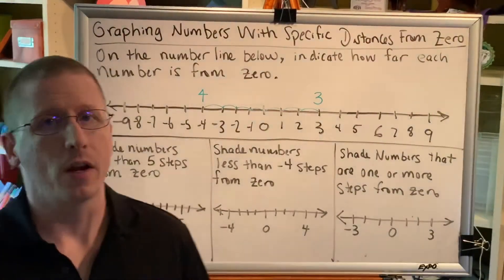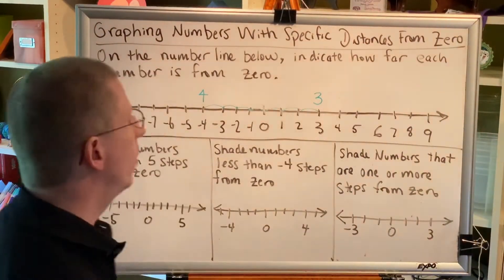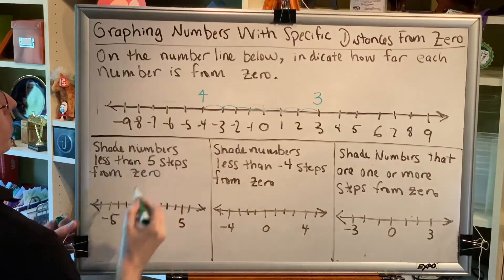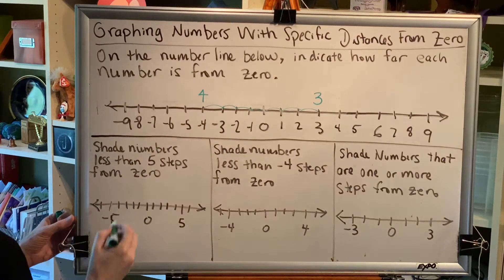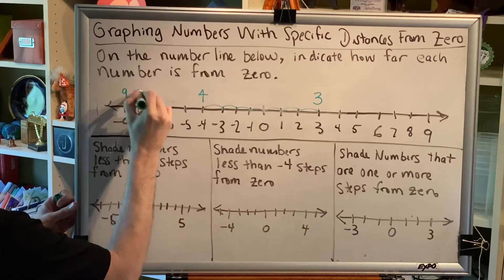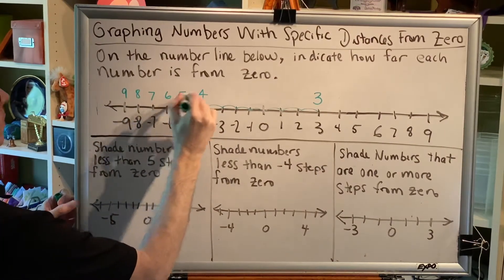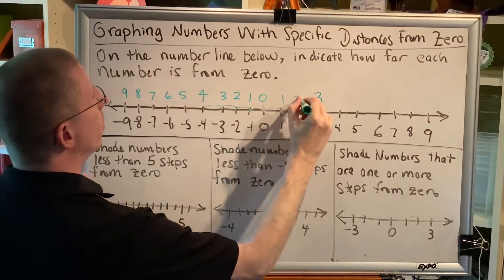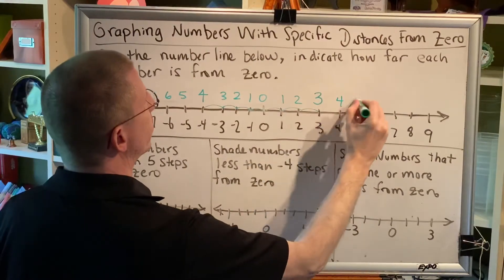Essentially, what we're measuring here is absolute value. The absolute value of 3 is 3. The absolute value of negative 4 is positive 4. So with this in mind, we can fill in all of the distances. We notice that they decrease to zero and then increase again.